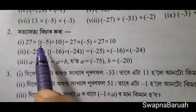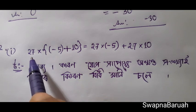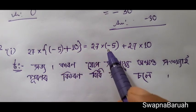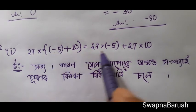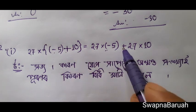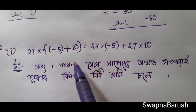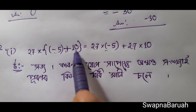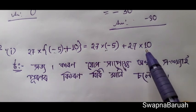We have to read: 27 into second bracket minus 5 plus 10. So 27 into minus 5, and 27 into 10. I know that has been my question. This will be 10.